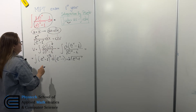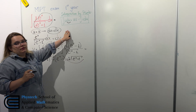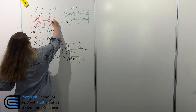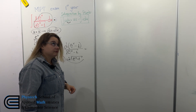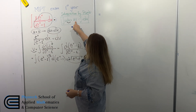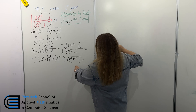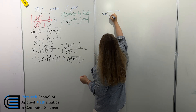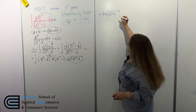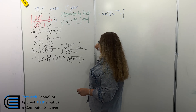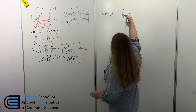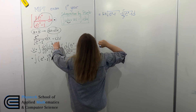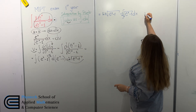We have u, we have du, and we have v, so now we can use the integration by parts formula. We write u times v: 2x multiplied by the square root of (eˣ minus 1), minus the integral of v du. v is 2, and du equals dx, so the remaining integral is 2 times the square root of (eˣ minus 1) dx.